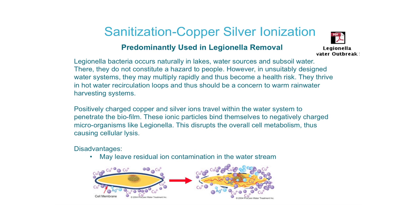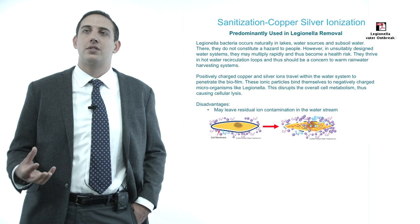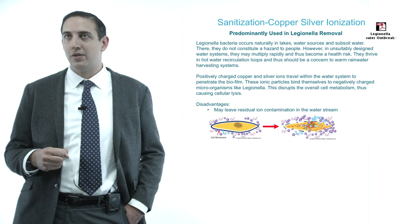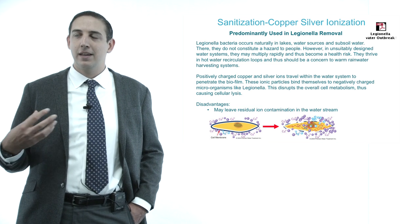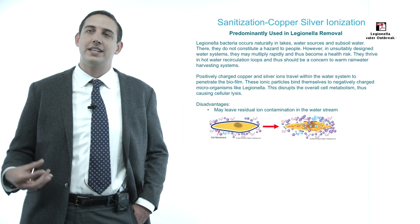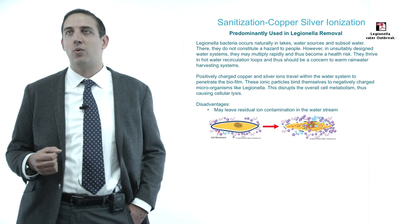As a side note, legionella is not generally found in rainwater systems because it is only found in standing bodies of water and only propagates at very specific conditions — typically about 90 to 95 degrees Fahrenheit, such as in hot water loops in hospitals. Many sanitization devices used for rainwater are not effective for legionella removal. It can be more of a concern in stormwater, where there can be more contact with standing or ground-level bodies of water.